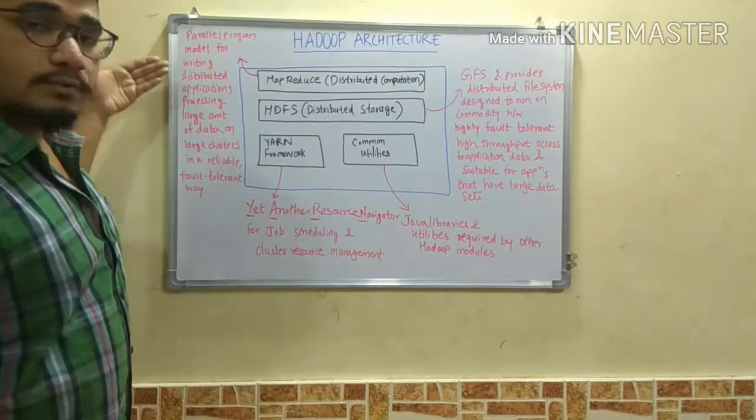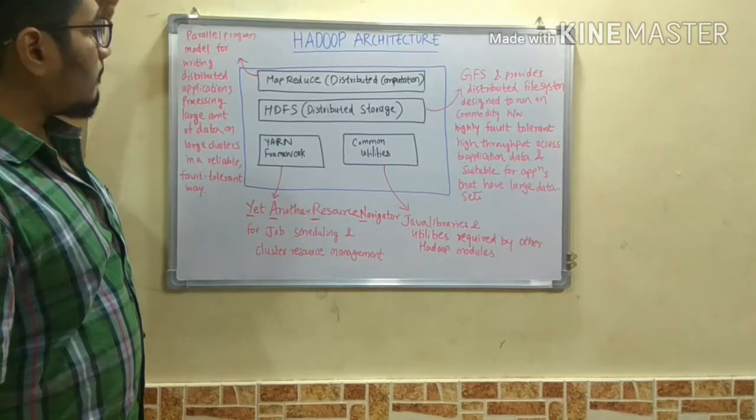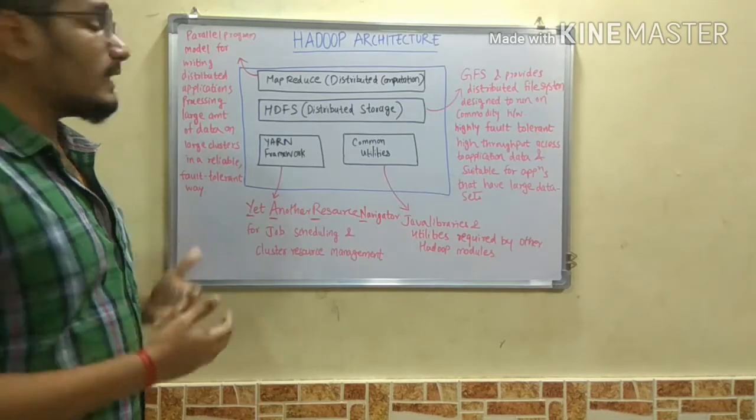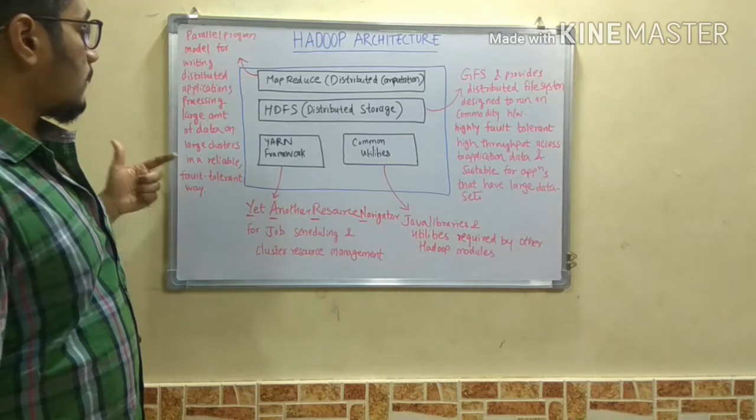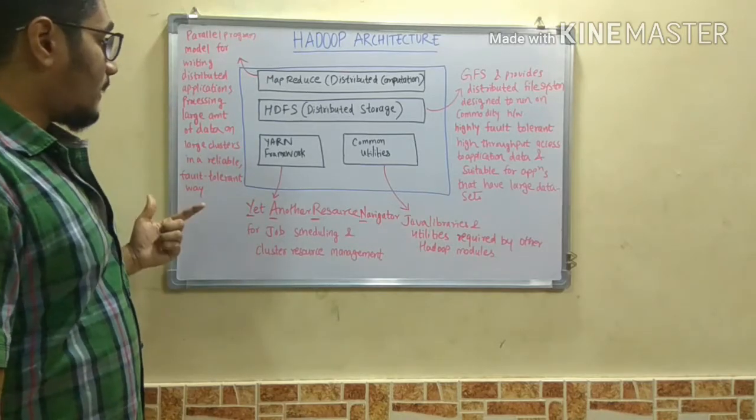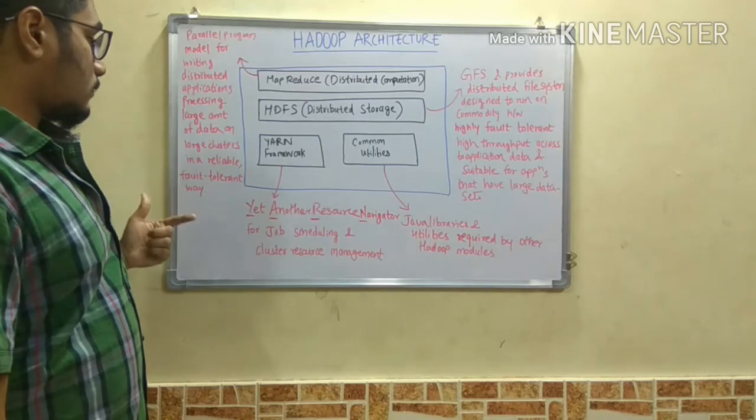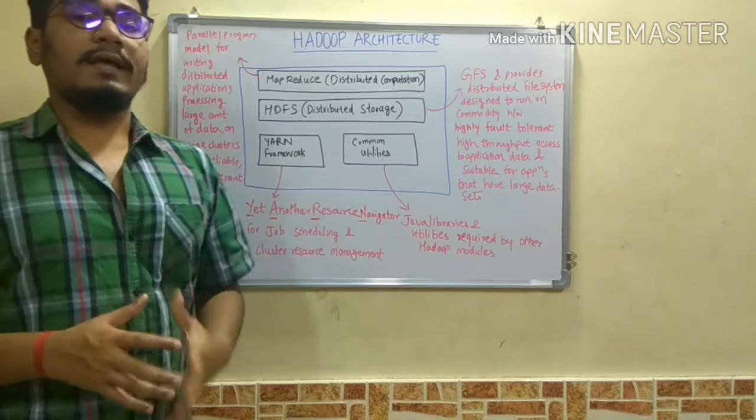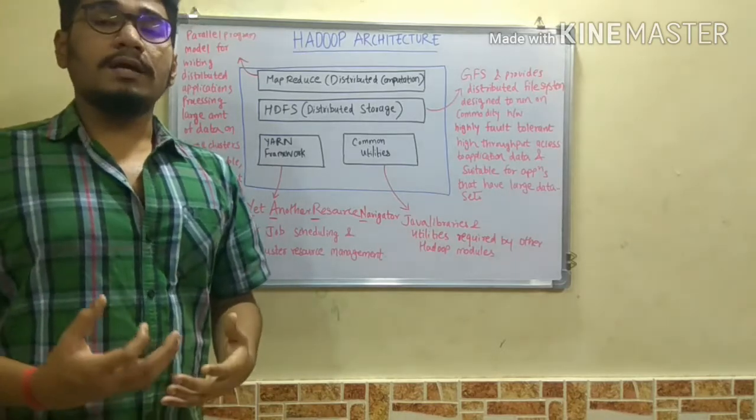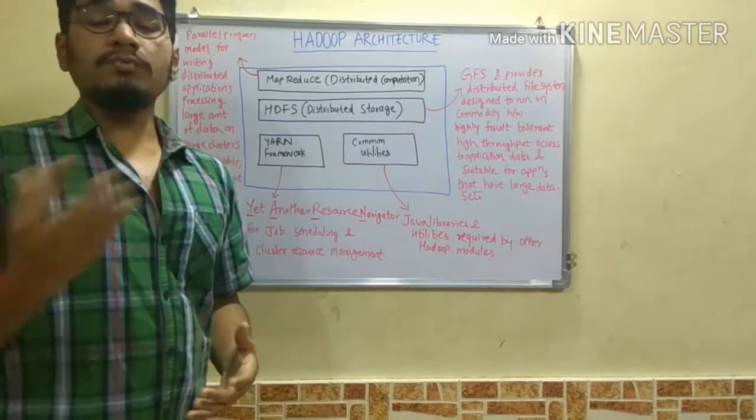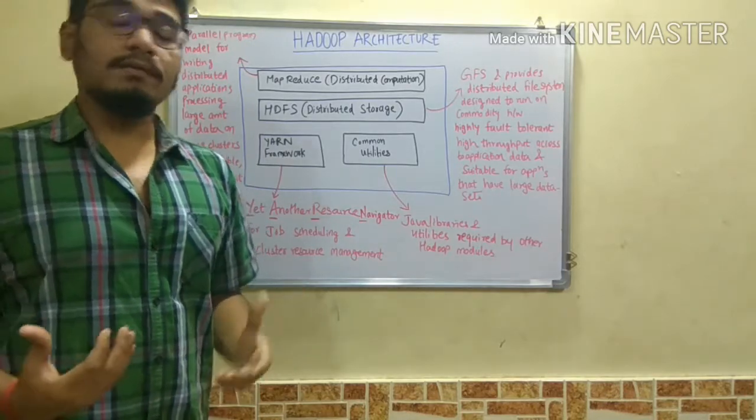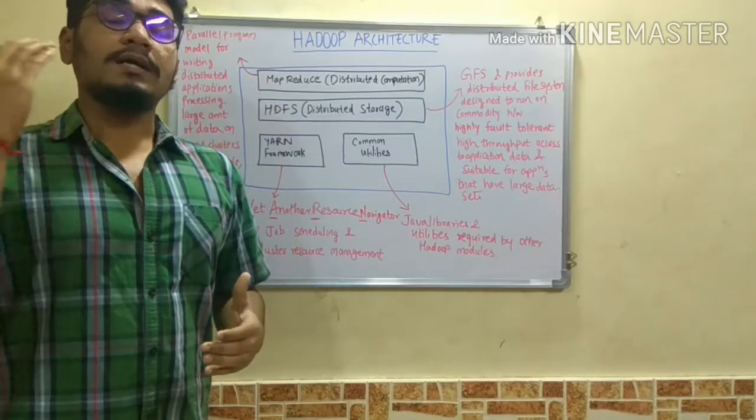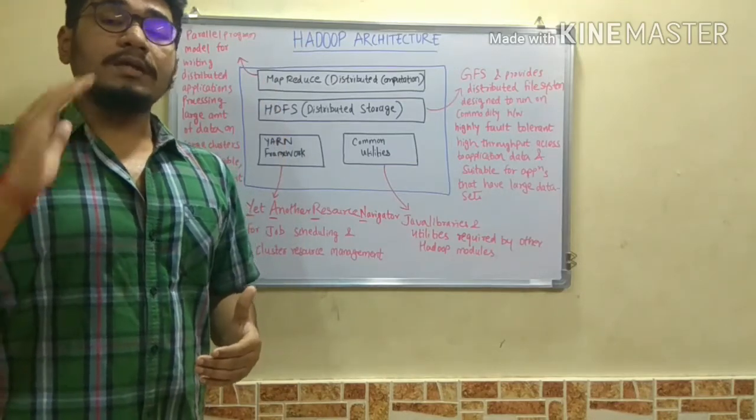Let's get into what is MapReduce. MapReduce is a parallel program model written in Java for running distributed applications and processing large amounts of data in large clusters of computers in a reliable and fault-tolerant manner. In MapReduce there are two phases: the map phase and the reduce phase. I'll be discussing these in successive videos. In map phase, it will cut short the...